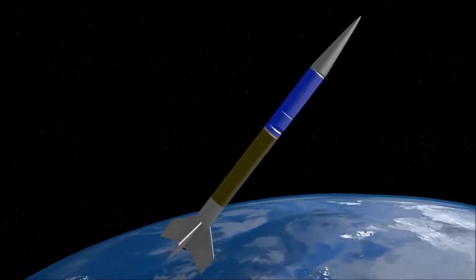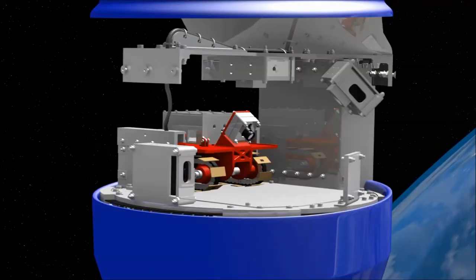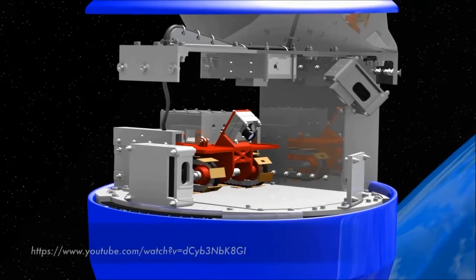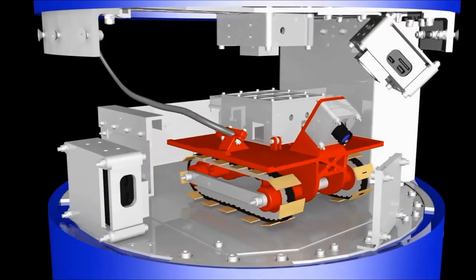After 70 seconds, the microgravity phase begins and the experiment starts. The goal is to test a rover that would ultimately move along the hull of a spacecraft in microgravity and vacuum to detect damages. These might have been caused by space debris or micrometeoroids.